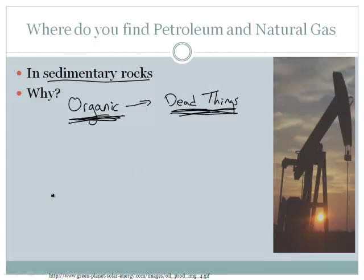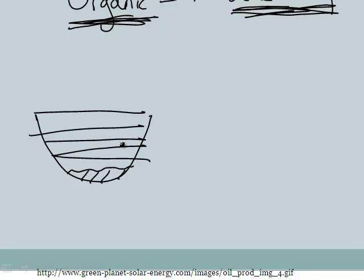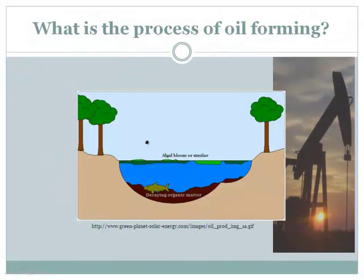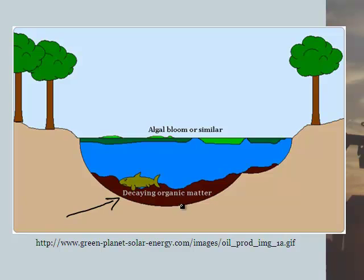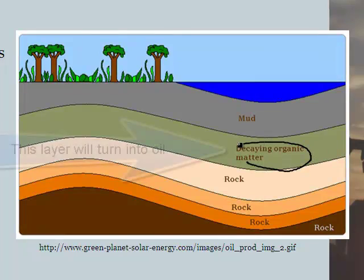Sedimentary rocks form as things get buried. If you've got a river or a lake, something dies and settles to the bottom, and over time layer after layer gets on top of it. Here's the process of oil formation: first we have decaying organic matter at the bottom of a lake. Then the dead matter is covered with silt and mud, which eventually compresses into rock, leaving the organic material trapped between two layers of rock.